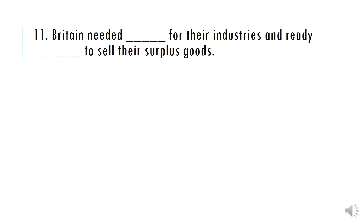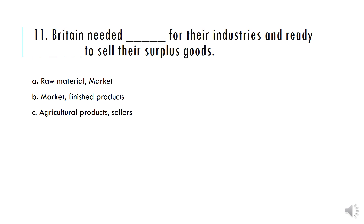Britain needed India for their industries and India as a ready market to sell their surplus goods. A) Raw Material and Market, B) Market and Finished Products, C) Agricultural Products and Sellers, D) None of the above. And the answer is Option A — Raw Material and Market.